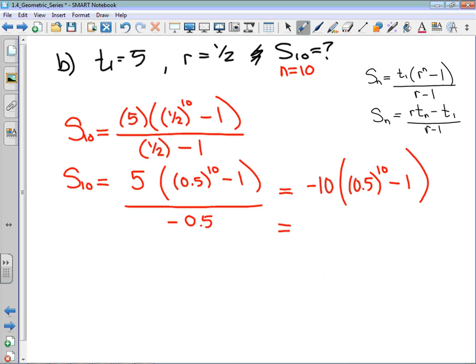The inside of that bracket is negative 0.9990234375. You do not want to just call that negative 0.99 or negative 0.9. Use the unrounded value in your calculator, multiply that by negative 10, and we get that the sum of these 10 terms is 9.9902343375.